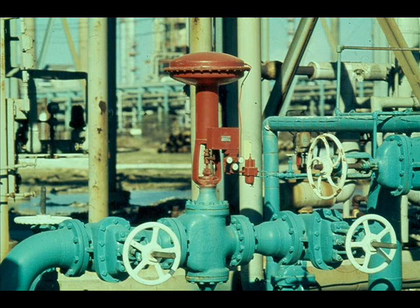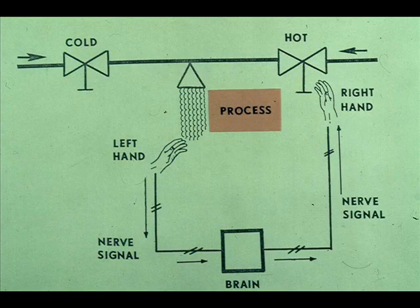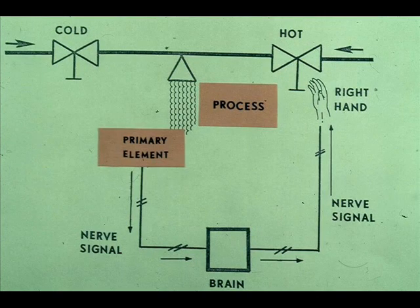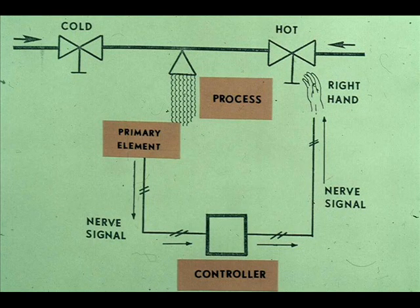A control valve will open or close as required to hold the process at the set point. The operation of a control loop may seem difficult until you understand what is taking place. Suppose we take the familiar shower-water control system as a simple example of a control loop.